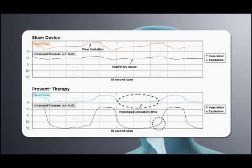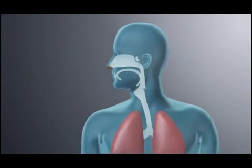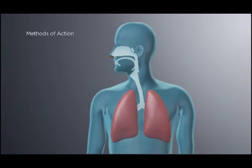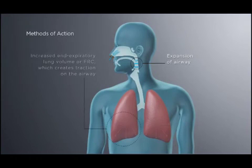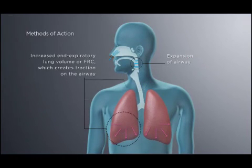There are three possible mechanisms through which ProVent therapy works: expansion of the airway until the start of the next inspiration; increased end-expiratory lung volume, or FRC, which creates traction on the airway, making the airway less collapsible;